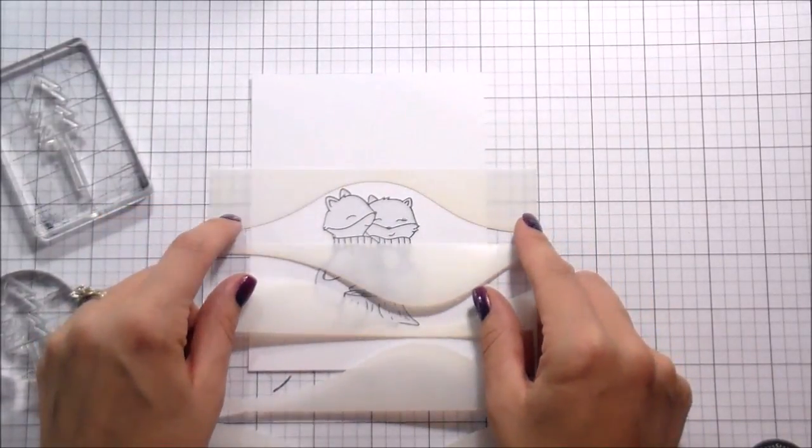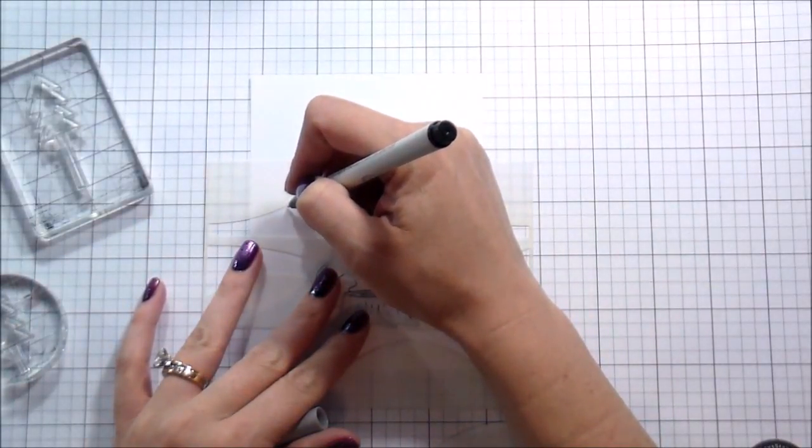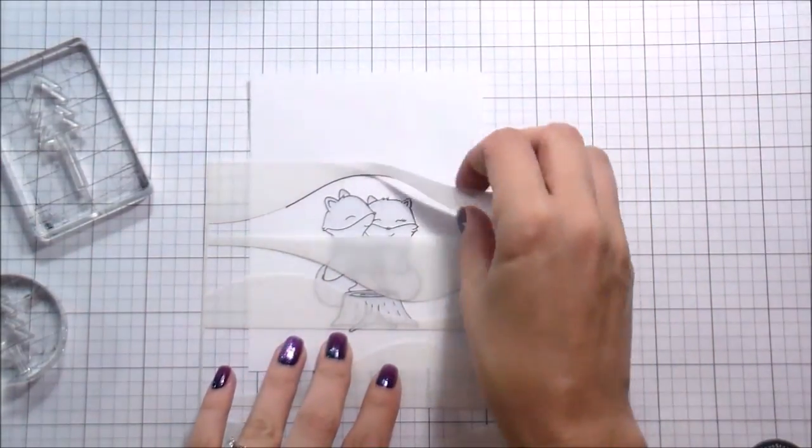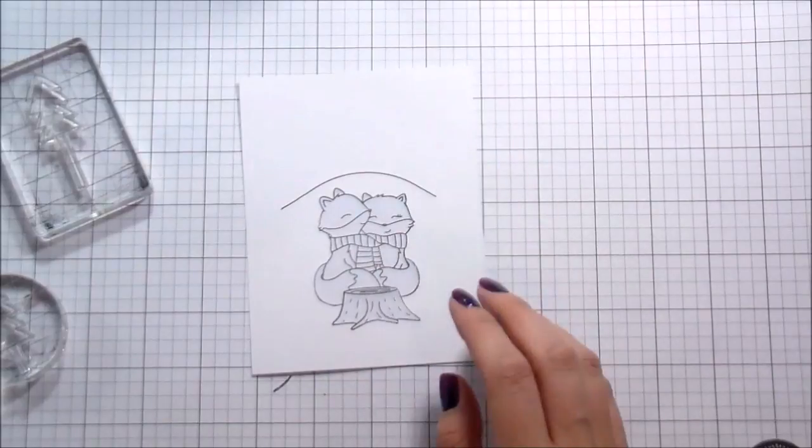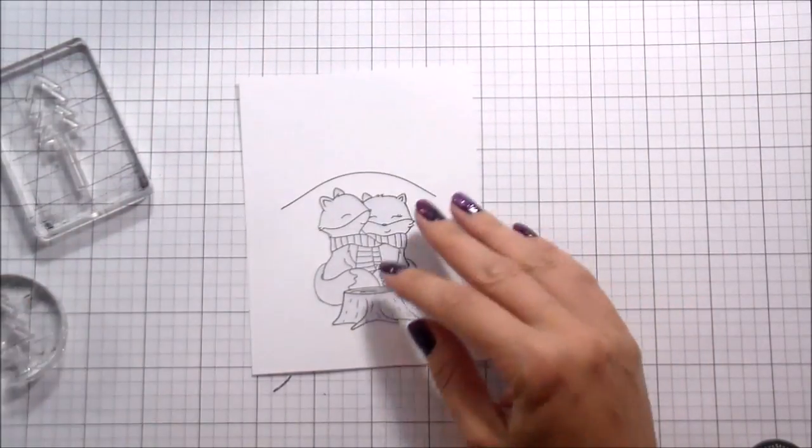So I stamped the little stump from the Lumberjack Love set, so they're kind of curled up on top of it, cuddling, and then I'm going to use a Copic Safe writing pen to trace the top edge of that stencil, and so that's going to create the focal point to start building my scene around.